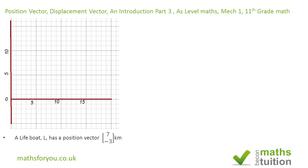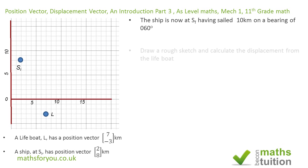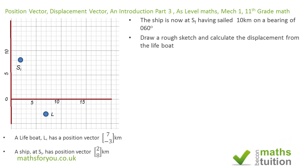Meanwhile, we've got a ship located at position S_i, and S_i has a position vector (2, 8). The ship now moves position from S_i by a bearing of 060 degrees and distance of 10 kilometers. We're asked to draw a rough sketch and calculate the displacement from the lifeboat to S_f.